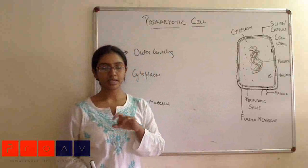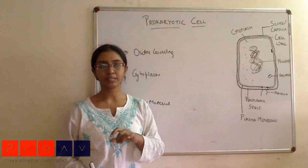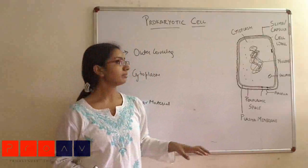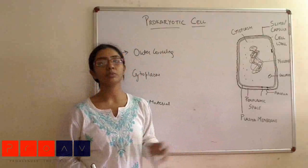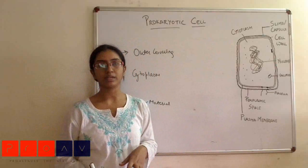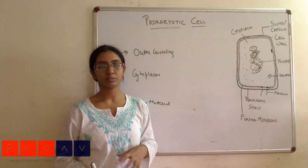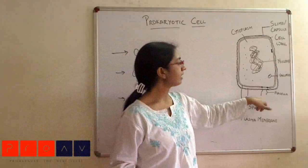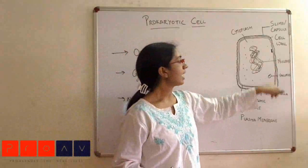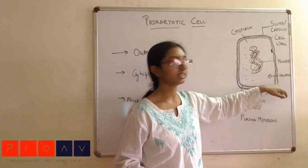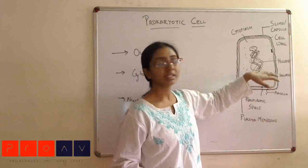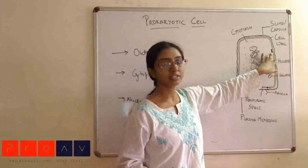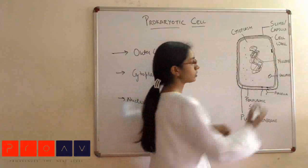The width of the periplasmic space differs among different prokaryotic cells. In many kinds of bacteria, the periplasmic space may not exist at all. Inside the plasma membrane, we have flagella that move out, vacuoles, and other structures. Associated with the cell wall are mesosomes.